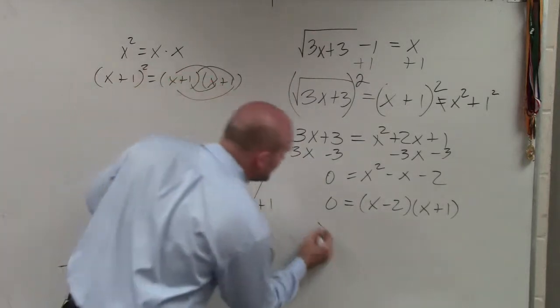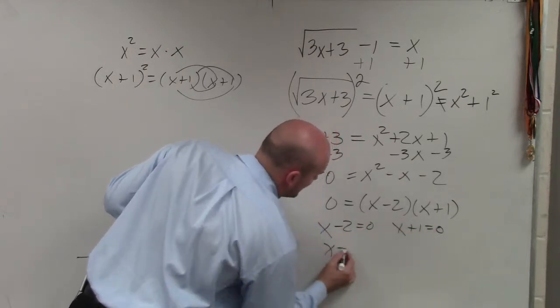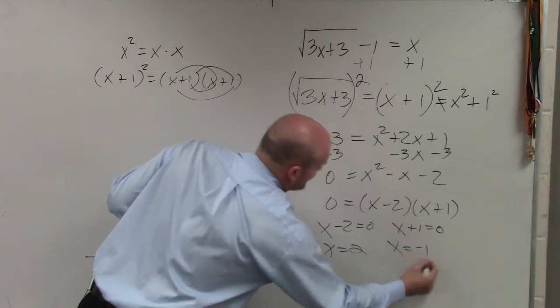Now, you use the zero product property. x minus 2 equals 0. x plus 1 equals 0. x equals 2. x equals negative 1.